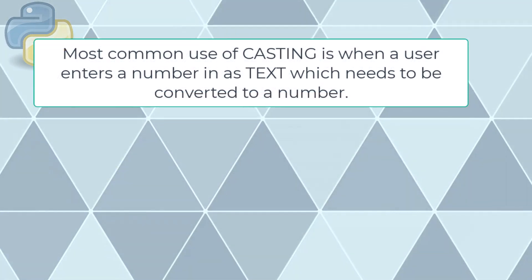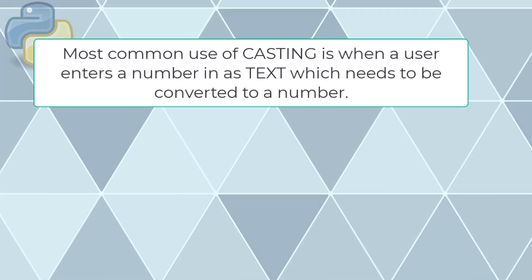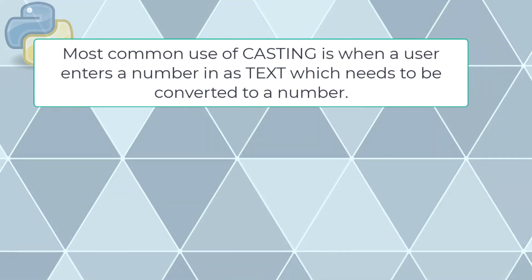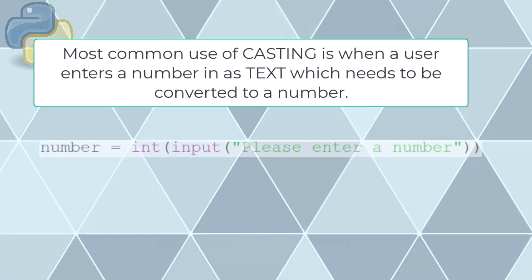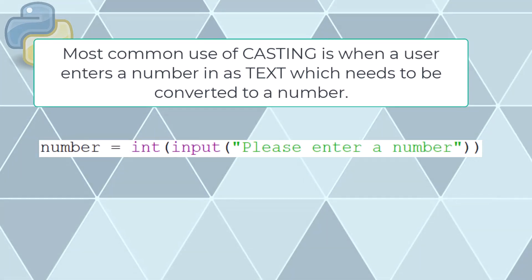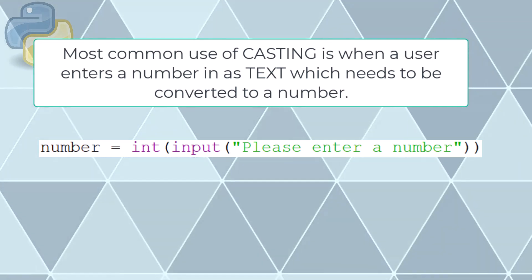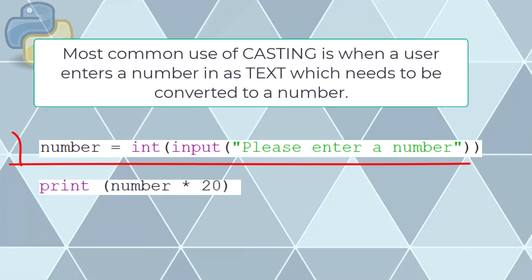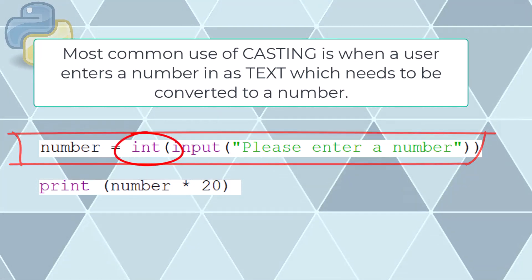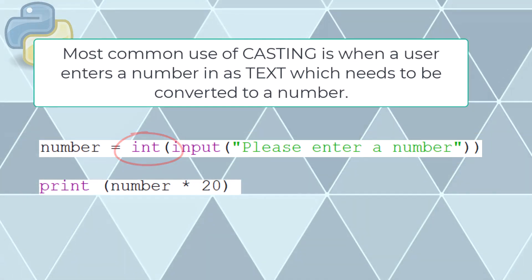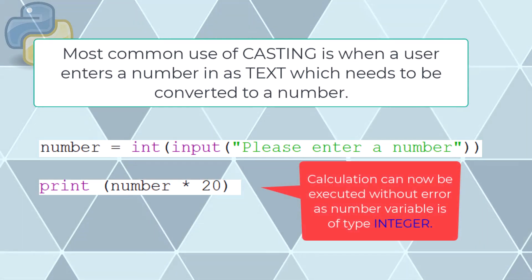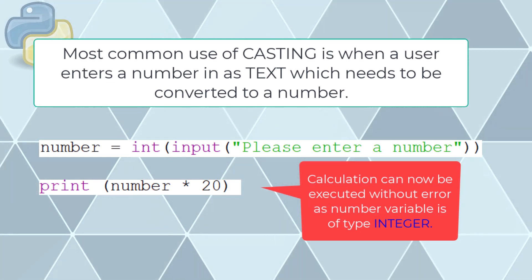The most common use of casting in Python occurs when requesting number entry from a user. Input from a user is always returned as a string, so to perform numerical calculations we need to convert the data type to either an integer or float. In this example we get text input from the user and use the int() conversion function to change it to an integer, which can then be used in a calculation — for example, 20 times the value of the variable number.